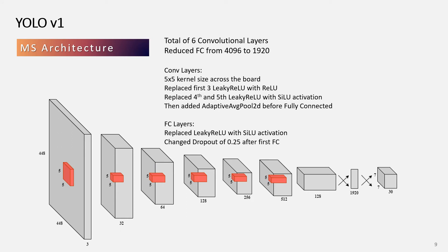My modified YOLO consists of six convolutional layers with modifications to the kernel size and activation, and adds an adaptive pooling layer before the fully connected layer. I also reduced the fully connected size from the original 4096 down to 1920.